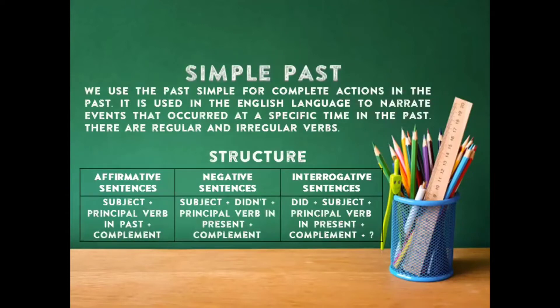Simple past. We use the past simple for complete actions in the past. It is used in English to narrate events that occurred at a specific time in the past. There are regular and irregular verbs. Tenemos que el pasado simple lo usamos para acciones completas que ocurrieron en el pasado, para narrar eventos ocurridos en el pasado. Y existen dos tipos de verbos: los verbos regulares y los verbos irregulares, que están en la guía pedagógica.